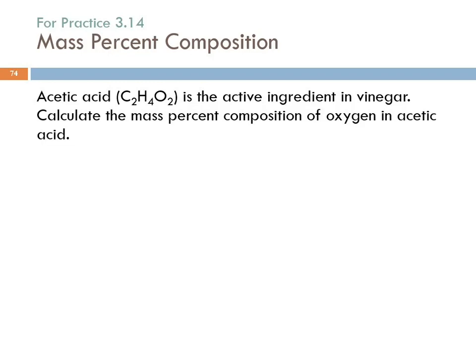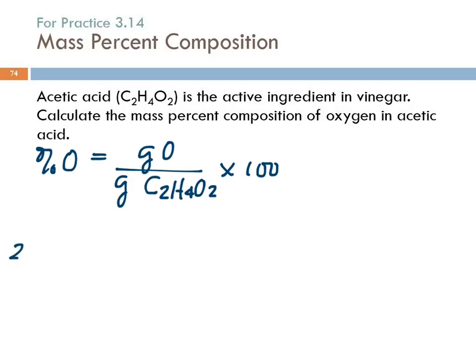Acetic acid is the active ingredient in vinegar. Calculate the mass percent composition of oxygen in acetic acid. So the percent oxygen is going to equal the grams of oxygen divided by the grams of the whole thing, C2H4O2, times 100. They didn't give us any masses. So we just choose one mole. And we're going to find the mass of one mole of acetic acid.